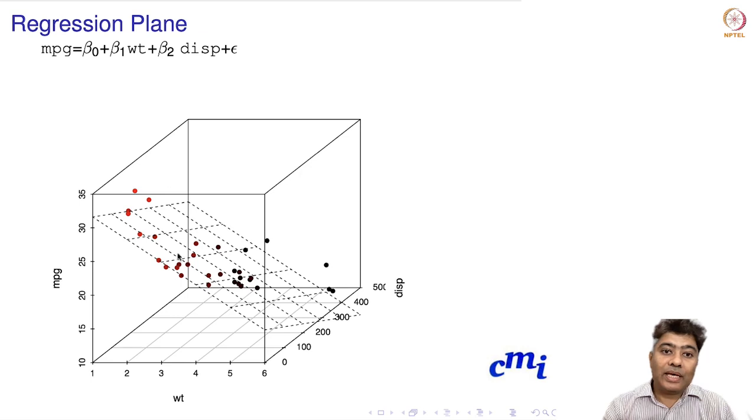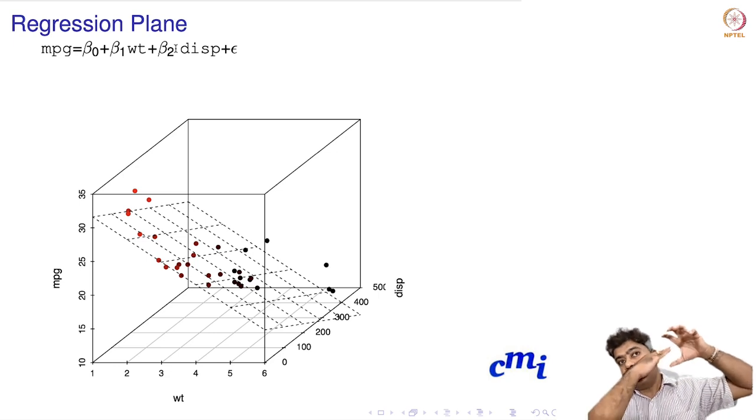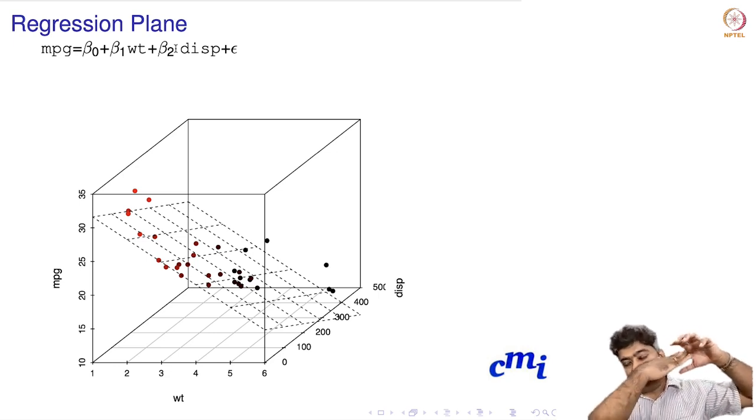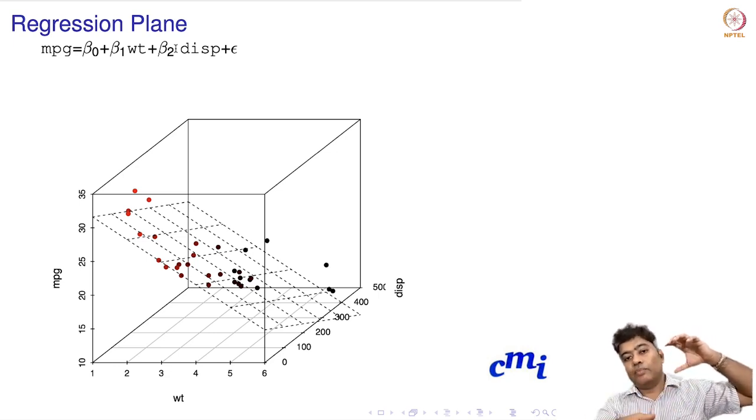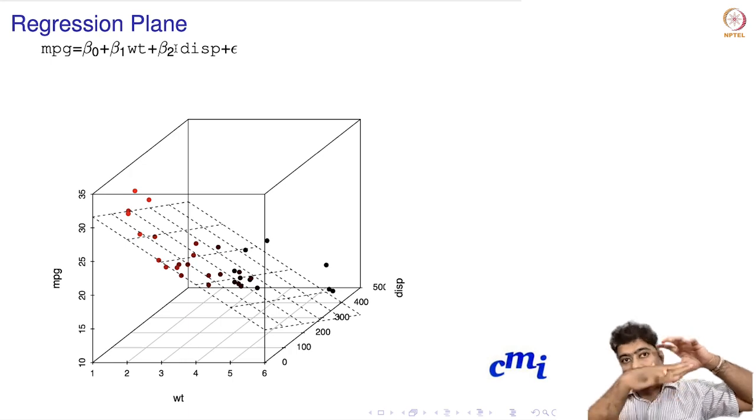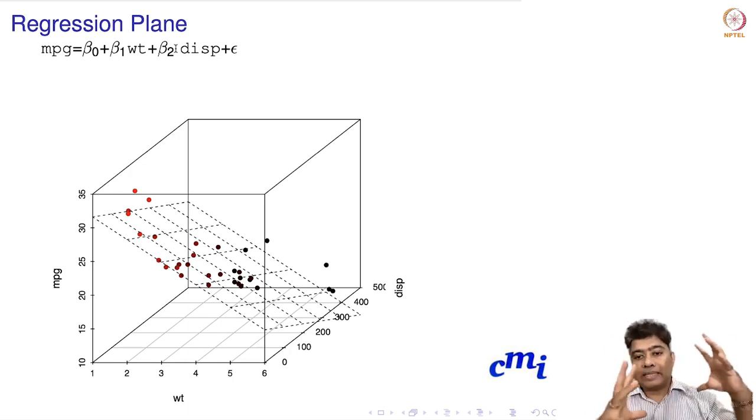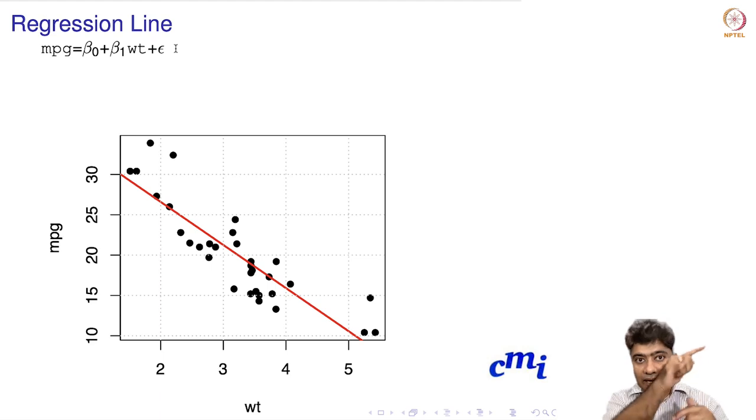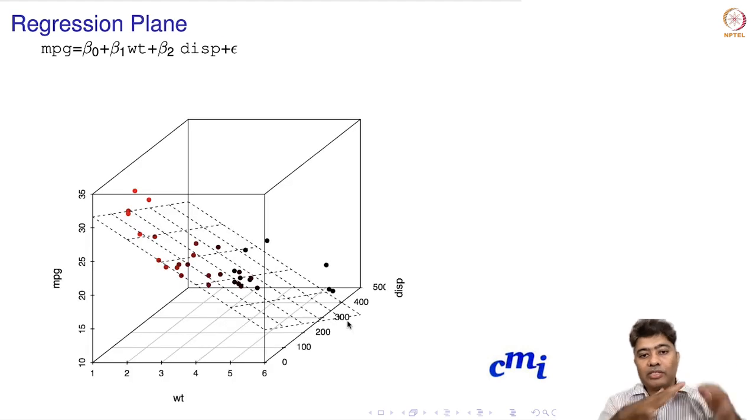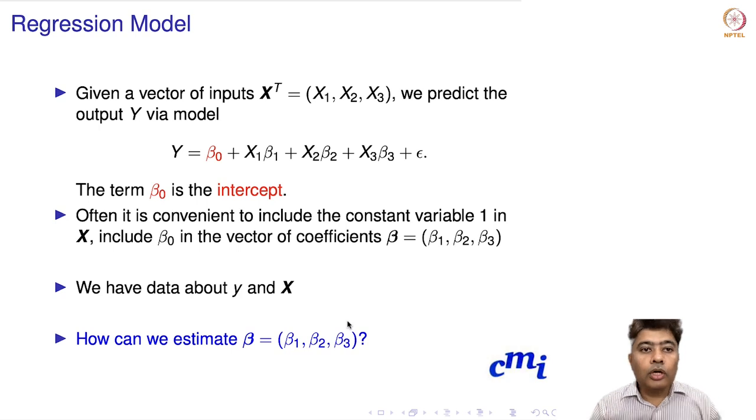This is what you're seeing in the graph. This model is trying to fit a plane through the points hanging in 3D space. Previously it was a line in two-dimensional space; in three-dimensional space it's a plane.